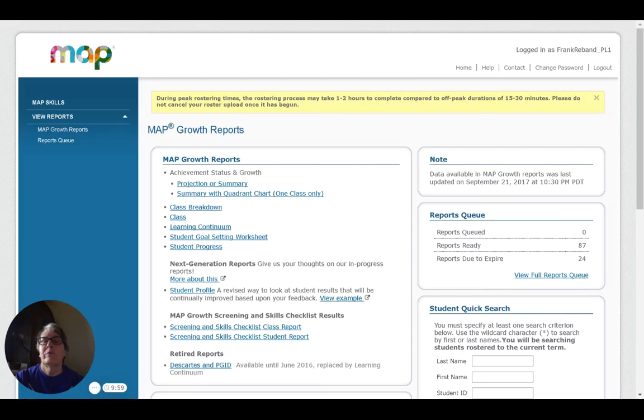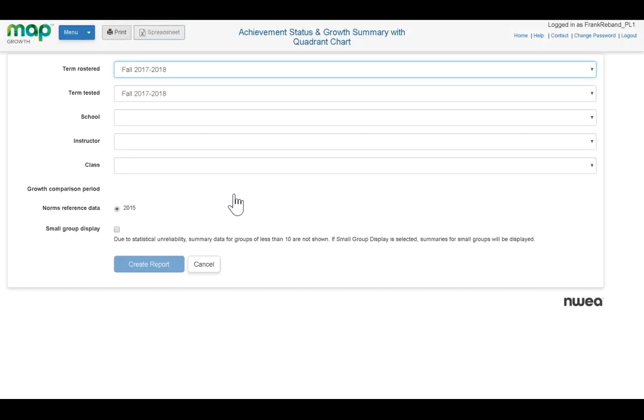Welcome back to the NWEA Map Basics for Teachers, sponsored by the Oklahoma Public School Resource Center. My name is Jean Potter, and I will be your guide for this session. We're going to be looking specifically today at the Achievement Status and Growth Report, and more specifically at the one called the Summary with Quadrant Chart. So let's take a quick look at that one.